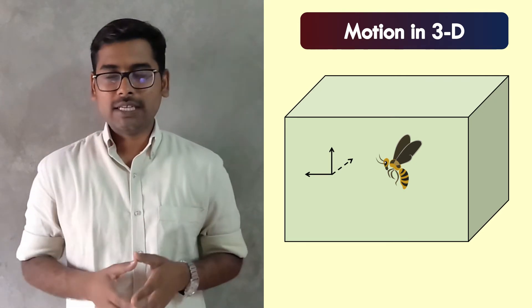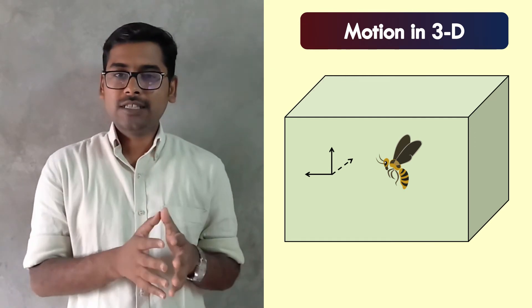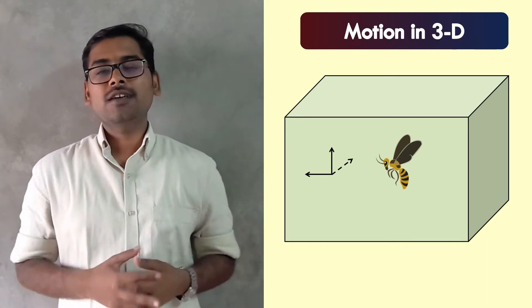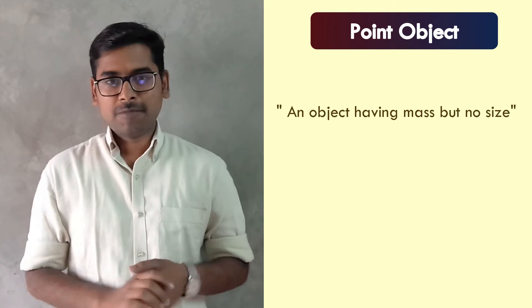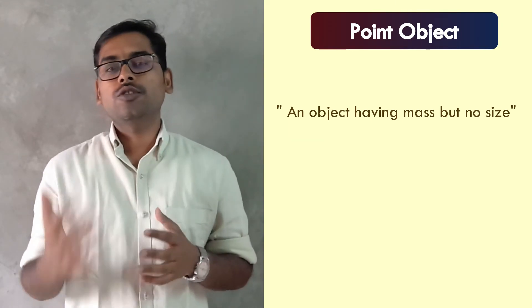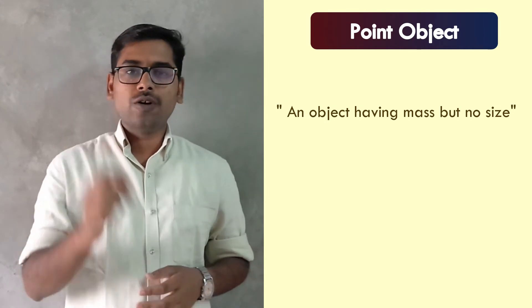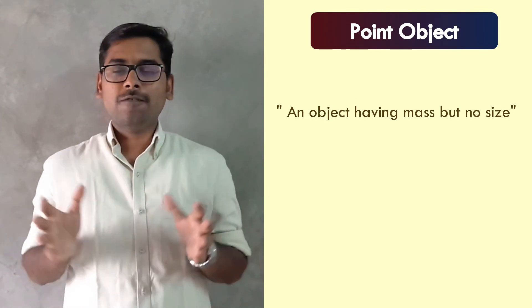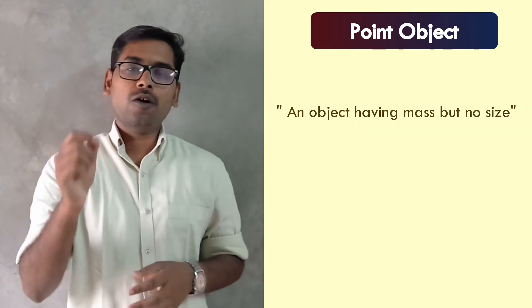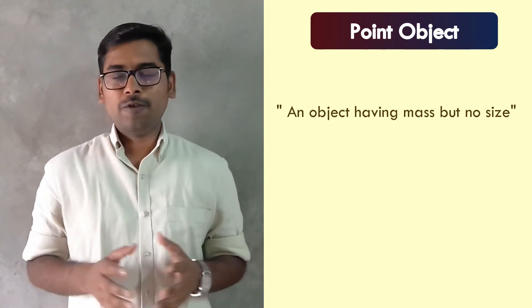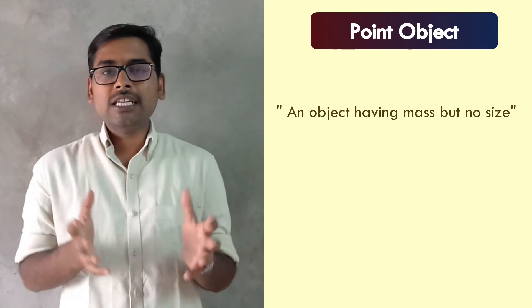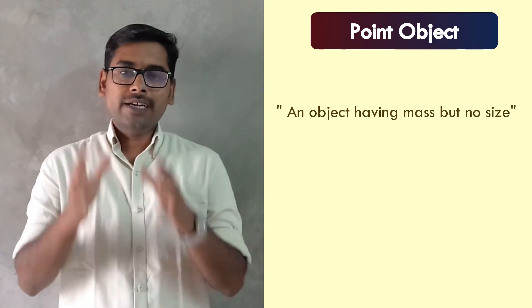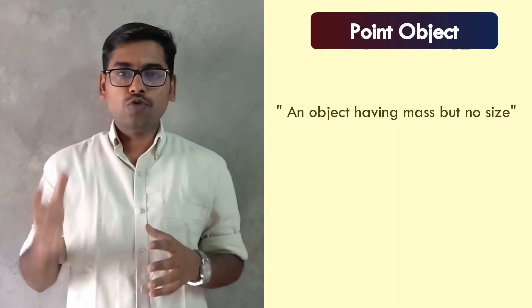I will give you a small task: write an example for each kind of motion in the comment section below. Now in the last part of this video, let us discuss the concept of point object. A point object is an object which has mass but no size, and it is represented by a point or a dot. But every object, however small, has some size — even the tip of a pen. So practically speaking, there is no such thing as a point object. It is just an assumption we make while studying the motion of an object.